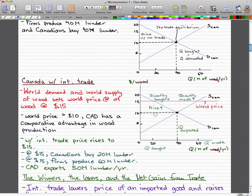So that's how you know that your own country has a comparative advantage, is that the world price is higher than the equilibrium price for whatever activity that your country is involved in.